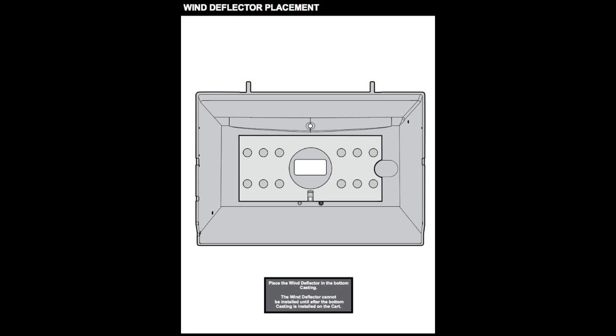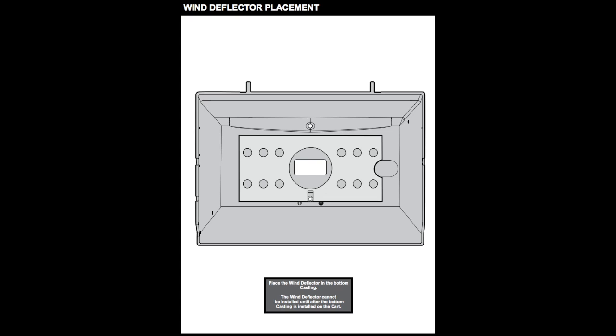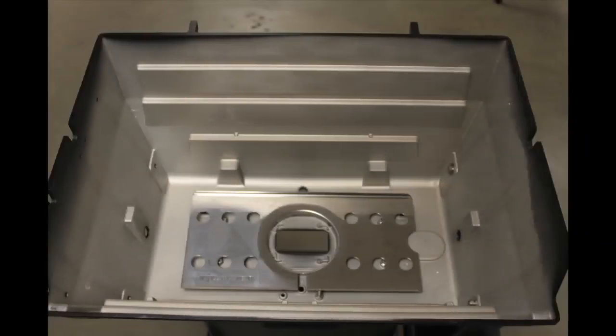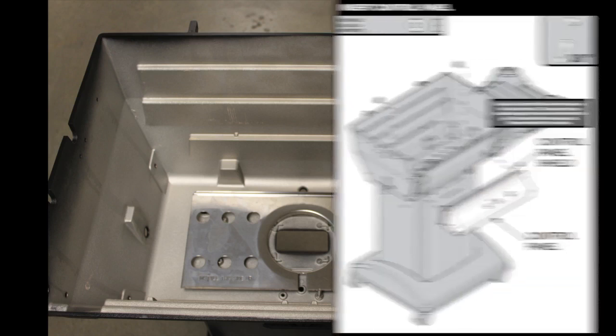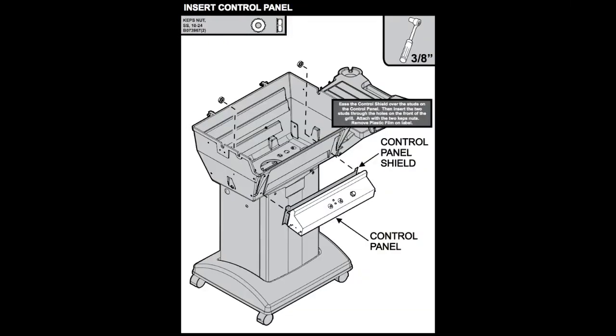Place the wind deflector in the bottom of the grill. Make sure the stainless shield is in place and then insert the two studs on the control panel through the holes on the front of the grill.